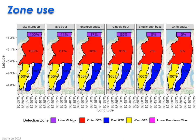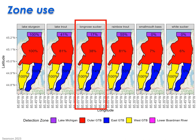Circling back to our first objective, we can visualize the different connectivity zone use across species. Lake trout and rainbow trout have a higher propensity to use areas further away from the Boardman River relative to other species. In contrast, smallmouth bass and white sucker generally stay fairly localized to West Traverse Bay, with the exception of a few individuals. Long-nose sucker show a generally intermediate trend, with 38% moving out to outer Grand Traverse Bay, 17% to Lake Michigan, and 14% to the east arm of Grand Traverse Bay. I'll use them as an example moving forward in our analysis.